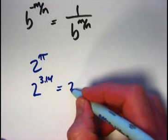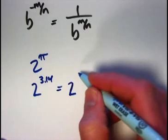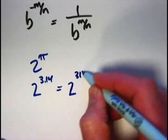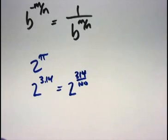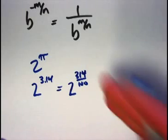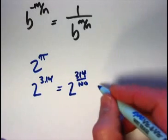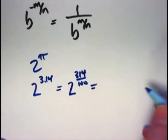Well, 3.14 is the same as, careful here, 314 over 100. That's a fraction that can be reduced because both the numerator and denominator are divisible by 2, for example. I'm not going to bother reducing it, though I could. That's a rational number.